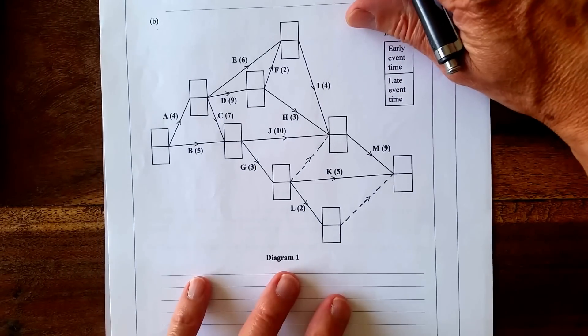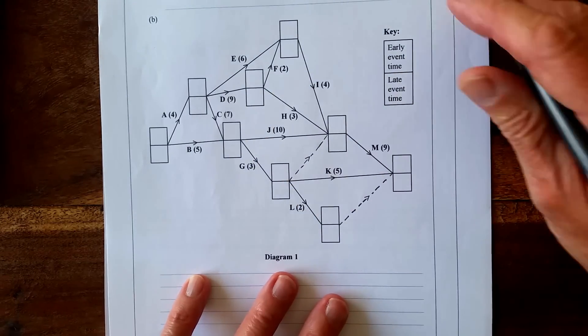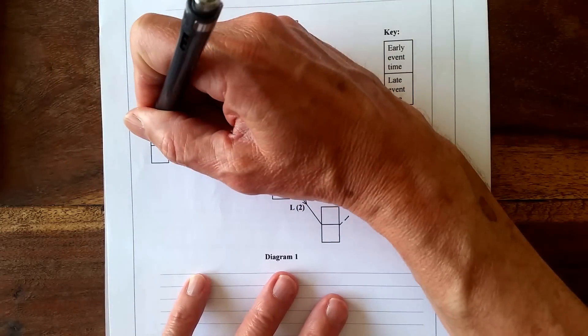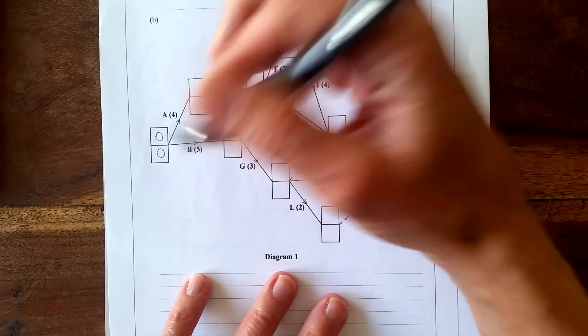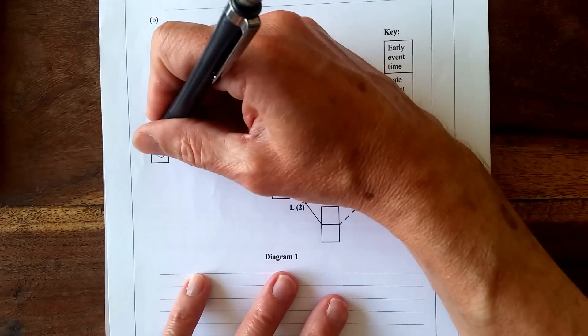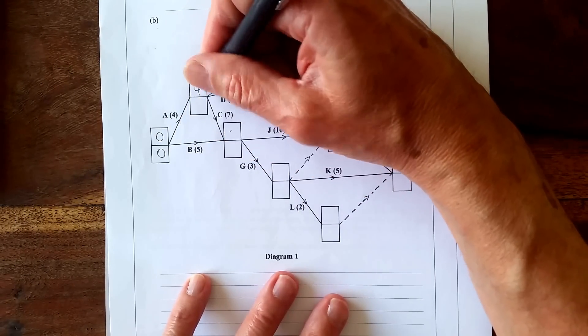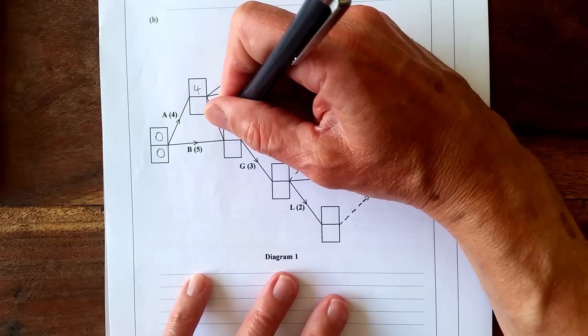When you go forward through, you do a forward pass, you want the biggest number possible. So you start with 0, 0 here, and let's go through them: 4, and then 5 here, but 5 from there, 4 plus 7 is bigger, so it makes that 11.